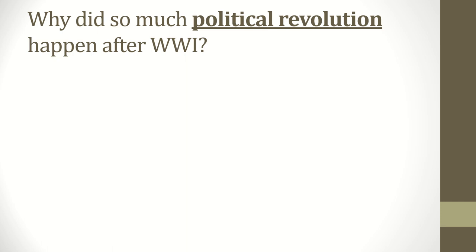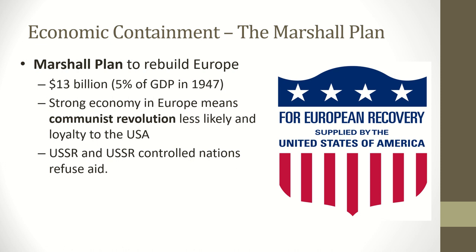A key part of containment concerned political revolution after World War I. As seen with both the Nazis and the Italian fascists, it was poverty after the war that led to the rise of radicals. So the United States' first act of economic containment was to create the Marshall Plan, which pledged $13 billion to rebuild Europe and bring it back into the world capitalist economy. The belief was that if countries were doing well financially, communist revolution would be less likely, and there was also a hope that loyalty could be bought at the price of rebuilding.